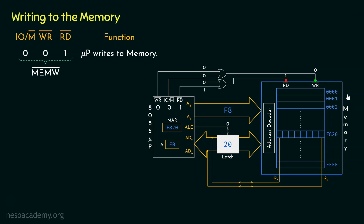Once the memory knows what the microprocessor intends to do, the data can be transferred. We are going to send EB via the data bus AD0 to AD7, and then it will be placed onto the data channel of the memory, D7 to D0, and finally placed within memory location F820. Within the memory location it will be stored as binary. E is 14, that is 1110, and B is 11, that is 1011. So within memory location F820, after the writing operation, the bits 11101011 will be stored.